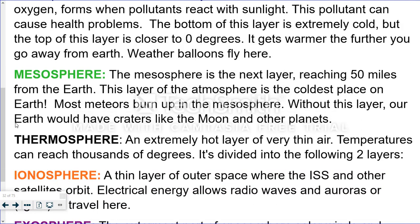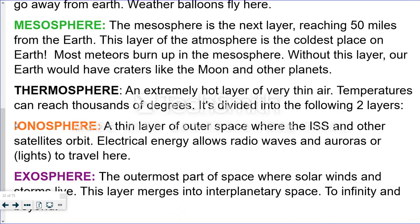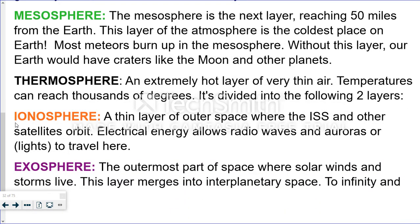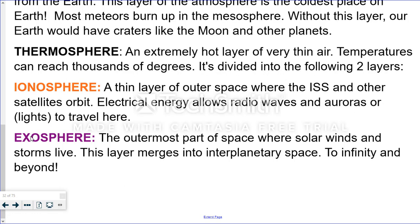The next layer is the thermosphere and it's the hottest place on Earth. It's very thin air up there and temperatures can reach thousands of degrees. Now the thermosphere is broken up into two distinct layers. The lowest layer of the thermosphere is called the ionosphere. This is where the International Space Station is housed. And this is where satellites orbit. Those satellites send radio waves back to Earth. This is also where you might see aurora borealis, those lights that travel in the northern skies. Exosphere is the highest layer of the thermosphere. It's the outermost part of space. And this is where you would find other moons and planets and the Sun.